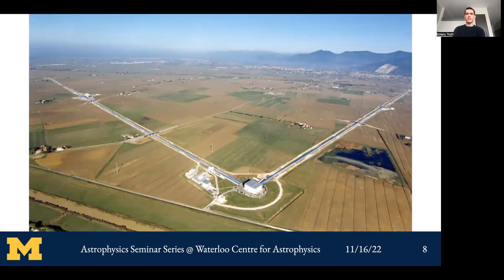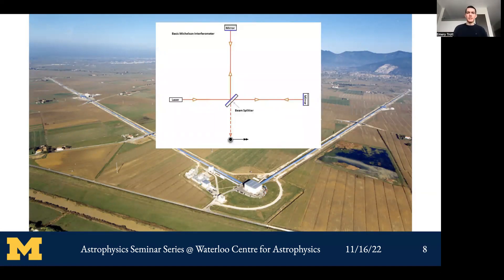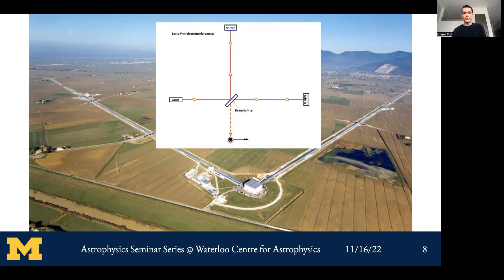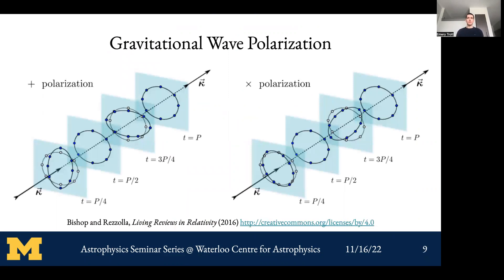One of the detectors used to measure these is Virgo — an L-shaped interferometer. In the oversimplified version, you send beams down several-kilometer-long tunnels and bounce them off mirrors. With no gravitational wave, the beams' phases destructively interfere back at the detector and you get no signal. But a gravitational wave causes a strain on the arms — fractional length changes — which alters the relative phase and produces a signal.